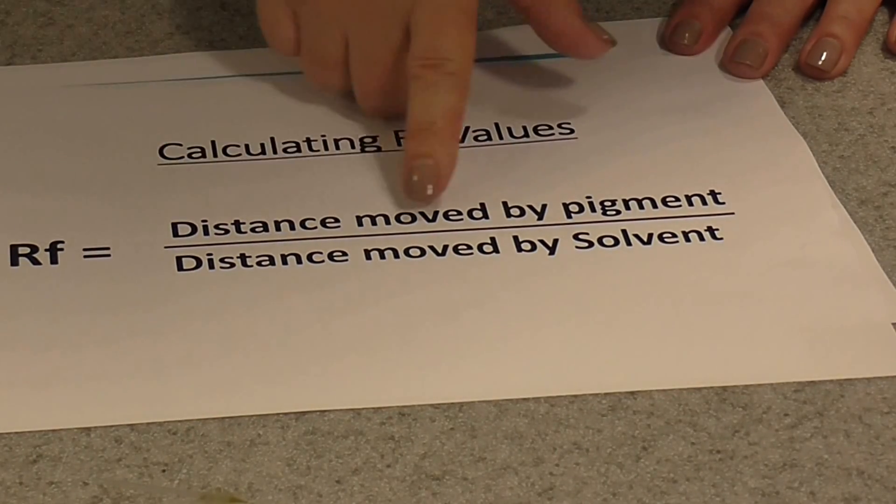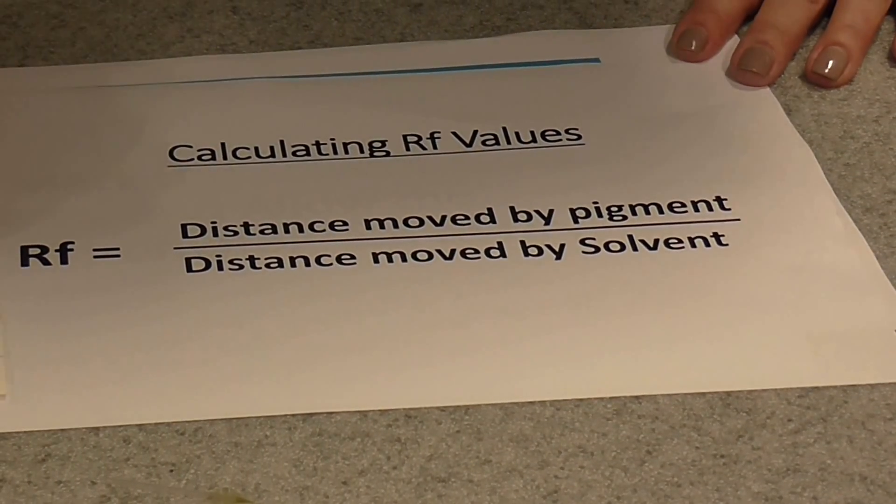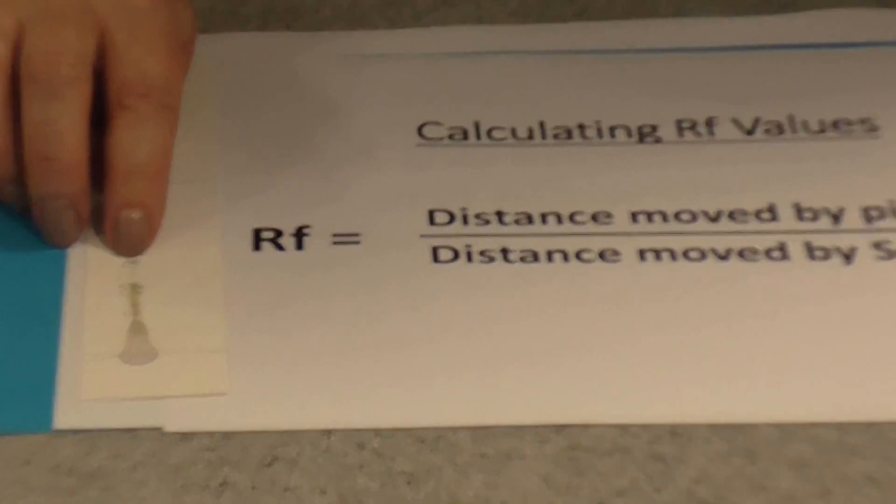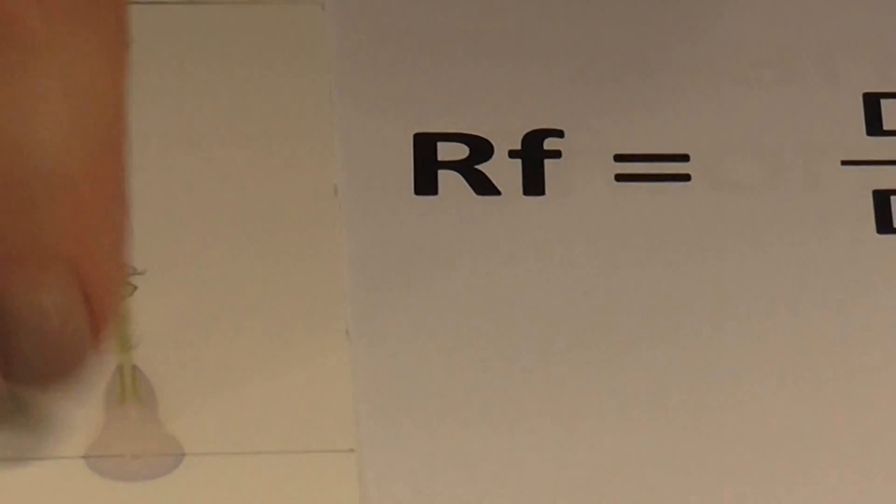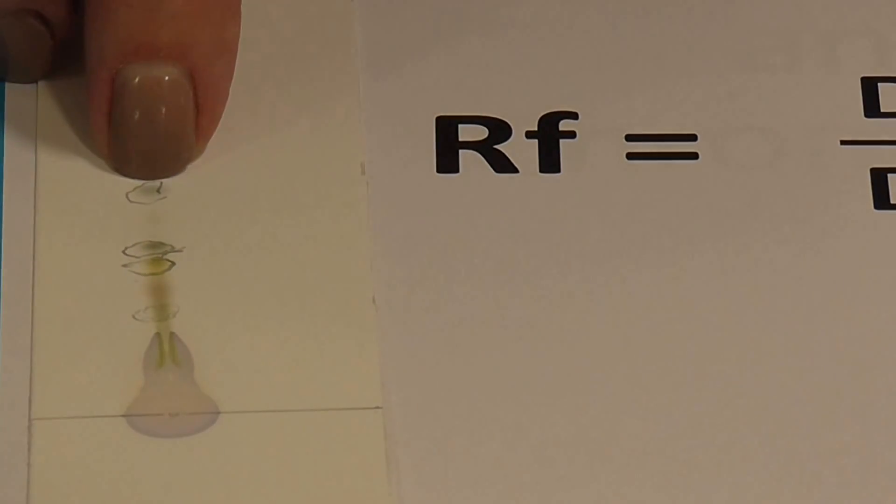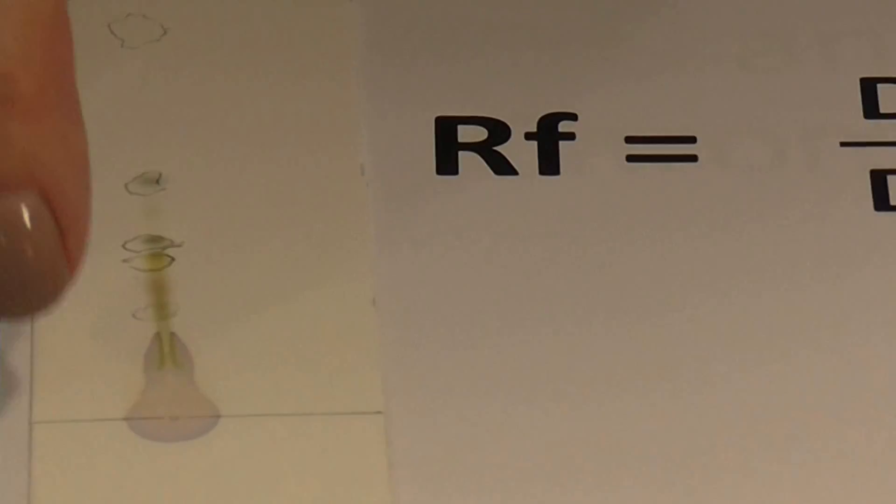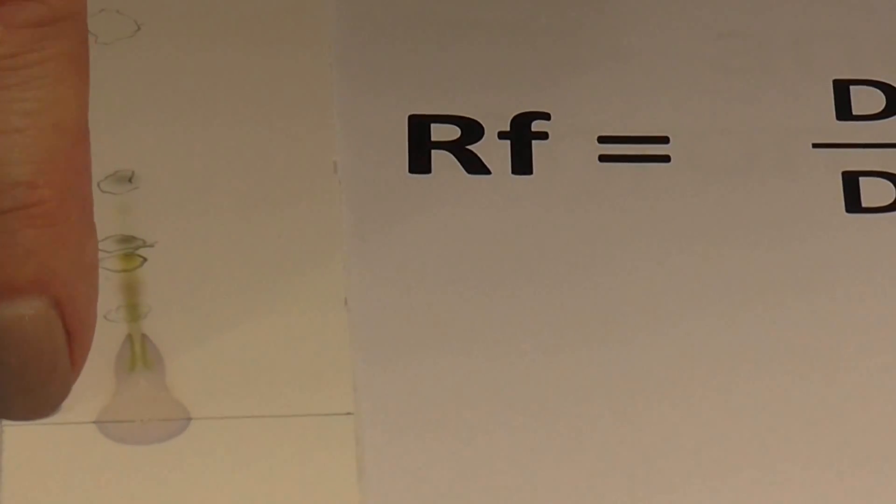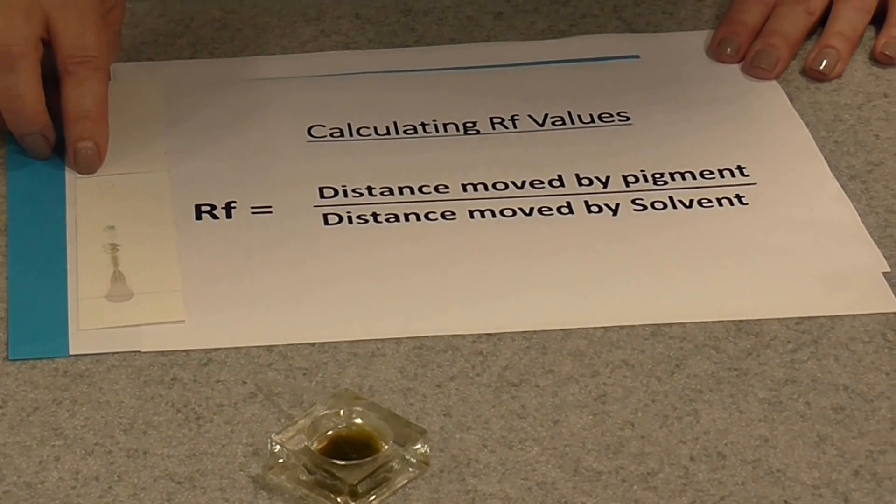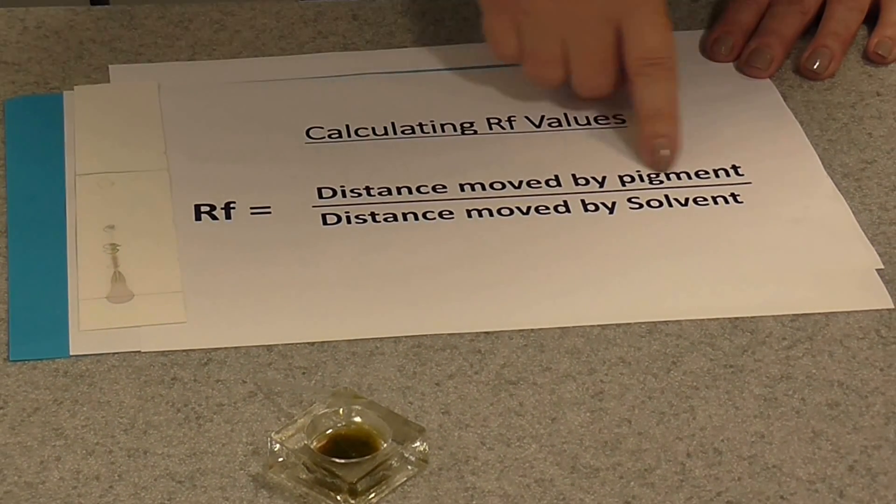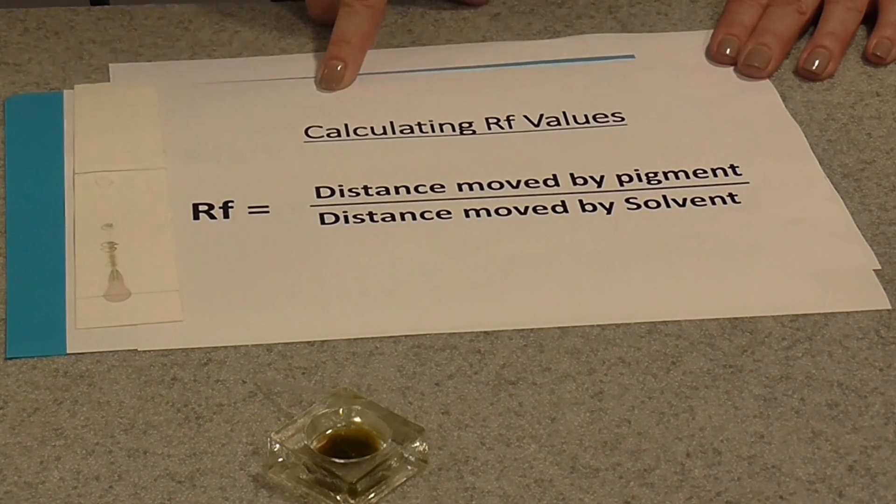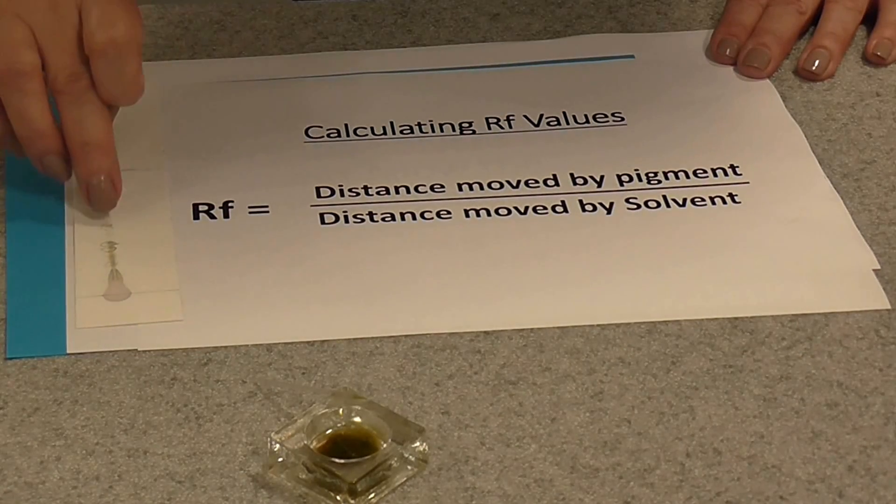It's simply the distance moved by the pigment. So you get your ruler and you measure to the farthest end of each pigment spot. So you see, we've got a kind of gray colored spot there. So I would measure from the origin line where the pigment was applied at the beginning to the far end of the pigment spot. So measure that. And then you also need to measure the distance moved by the solvent from the origin up to the solvent front that you marked when you removed your TLC plate. So it's simply the distance moved by the pigment divided by the distance moved by the solvent. And that will give you an RF value for each pigment that you can see.